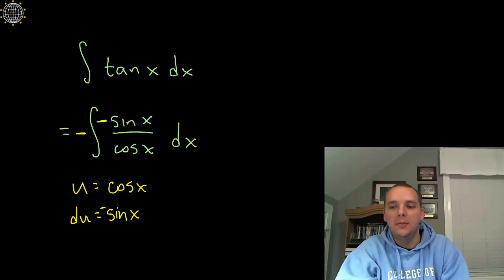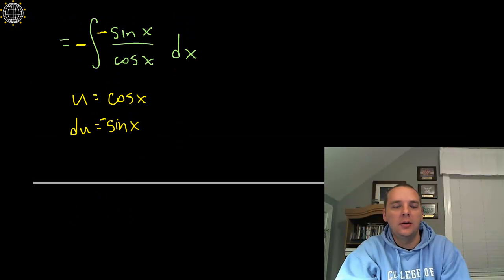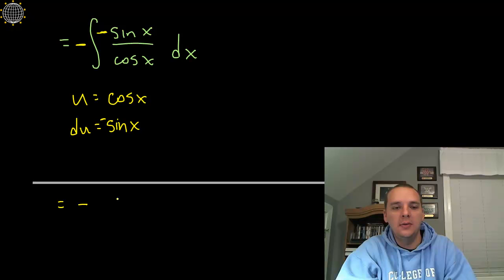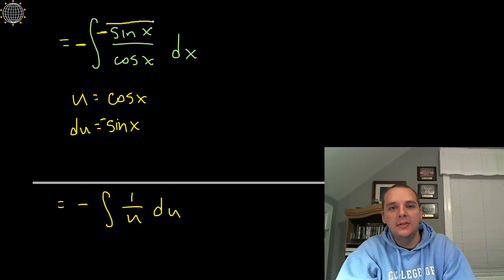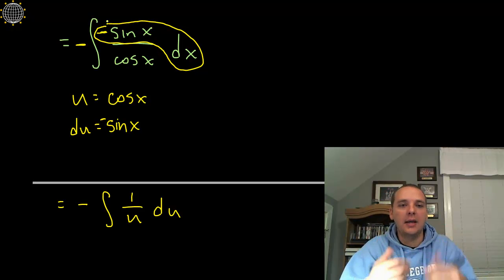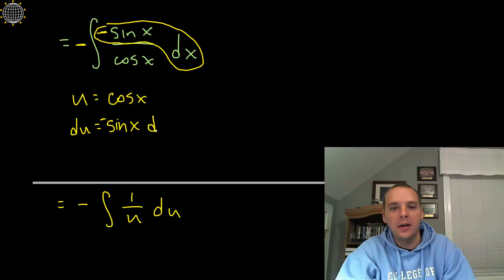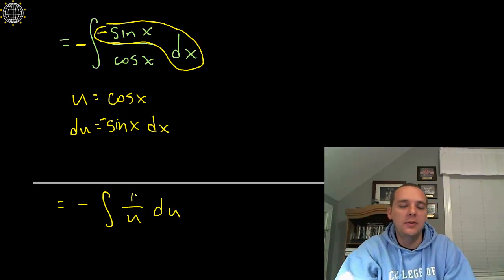Alright, so this simplifies now to the negative, the integral of basically one over u du. Now what did I just do there? Well, the negative sine x dx, all that comes out as a packet, and forgive me I forgot to write dx here earlier. Negative sine x dx all that comes out together and is equivalent to du, so all I did was pull the du off to the side, which leaves an understood one in the numerator.